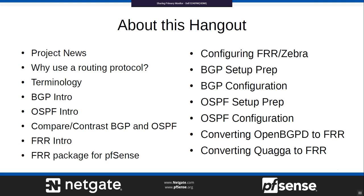This month we'll be covering project news, then ask why you'd want to use a routing protocol, go over routing protocol terminology, give a brief intro to BGP and OSPF, compare and contrast them, talk about when you'd use one or the other, cover what FRR is and how it works on pfSense, configuring FRR and its Zebra component, BGP setup and configuration, OSPF setup and configuration, and converting from OpenBGPD or Quagga to FRR.